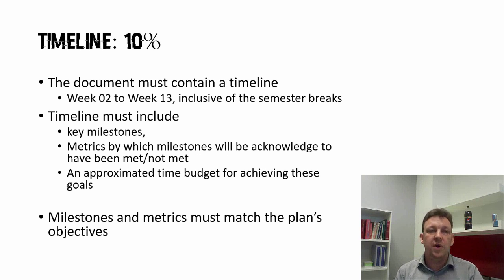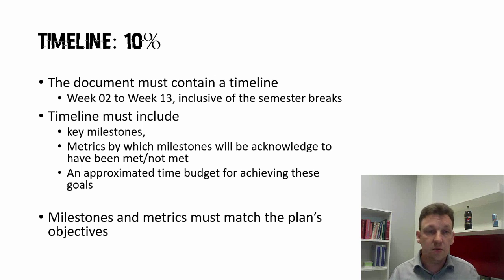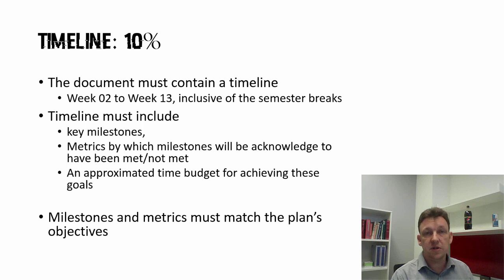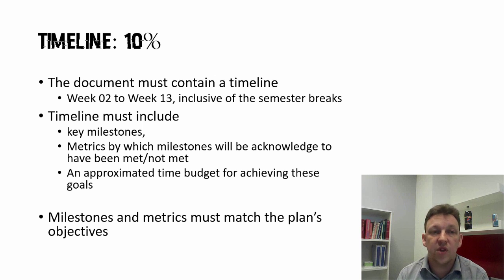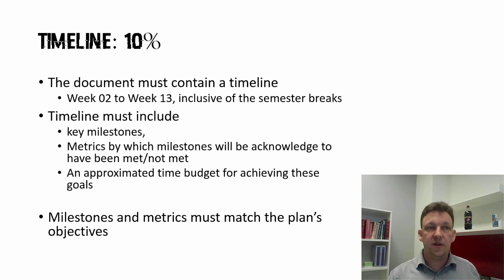The timeline should start from the second week of semester and show what you are doing and have done by the time you submit this assignment — there should be a couple of marks of things you've already achieved. I want it to map out to the end of semester: what are your milestones? I want to know what your measurements are. For example, your milestone might be 50 followers by week 8, and your metric is how many followers do you have. I also want you to be thinking about time budgets — how many minutes, how many hours, what sort of investment do you need to make? Those milestones and metrics have got to match your plan document.